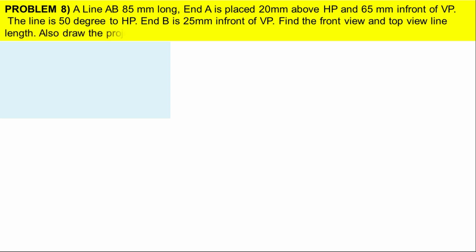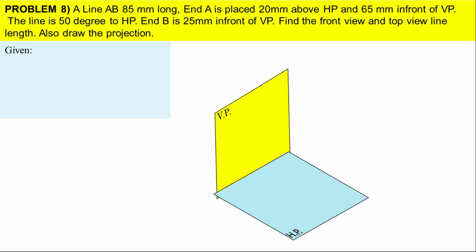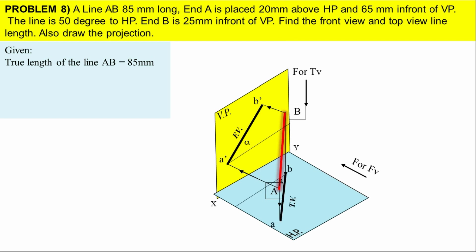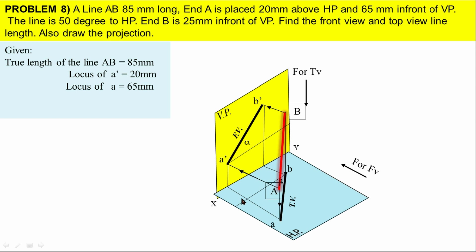Let's note the given data. See the figure - this is the actual position of our line. The length of line AB is 85 mm and we have the locus detail. In this problem we have a different position. The locus of A' is 20 mm above HP, and see that the front of A is projecting away from the XY.